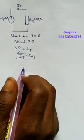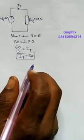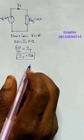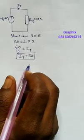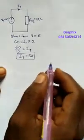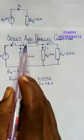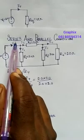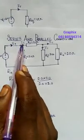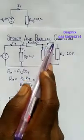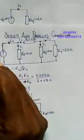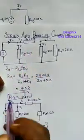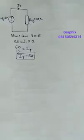Now we want to know each current flowing through each resistor — I1, I2, I3, and I4. We already have IT = 5 amperes. We'll use the current divider rule to find each individual current, starting from the front of the circuit.